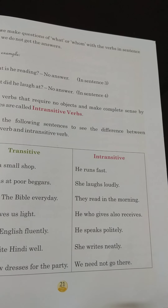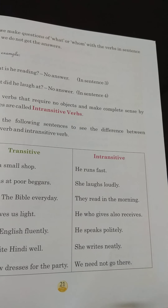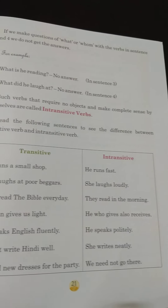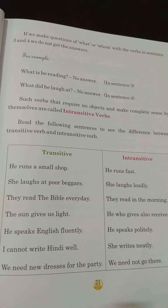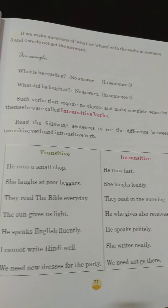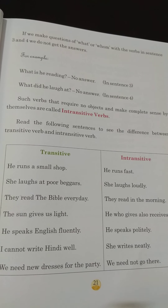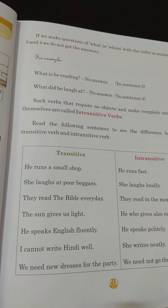Now, intransitive examples: 'He runs fast.' 'She laughs loudly.' 'They read in the morning.' 'He who gives also receives.' 'He speaks politely.' 'She writes neatly.' 'We need not go there.' In such verbs that require no objects and make complete sense by themselves, they are called intransitive verbs.